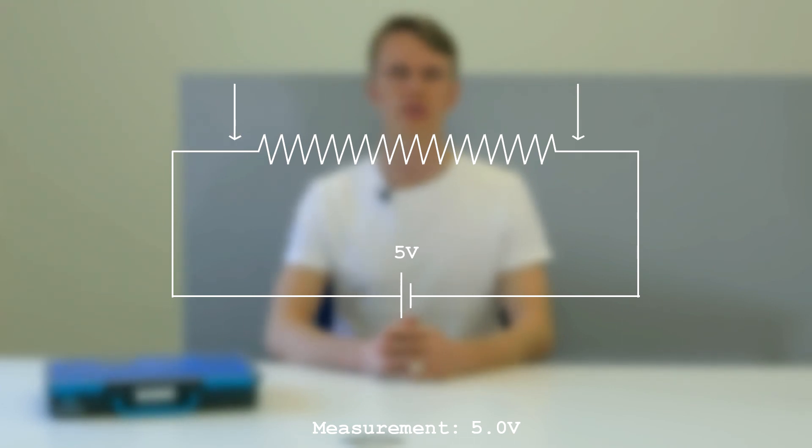If the voltage is measured from one of the ends of the resistor to its halfway point, the result is 2.5 volts. Furthermore,